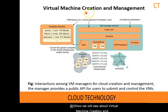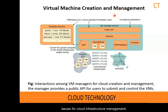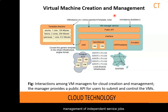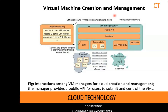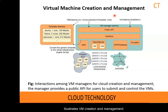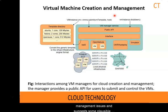Now we will see about virtual machine creation and management. We will consider several issues for cloud infrastructure management, including the resource management of independent service jobs and how to execute third party cloud applications. Cloud loading experiments are used by the Malphone Research Group under the French Grid 5000 system. This experimental setting illustrates VM creation and management. This case study example reveals major VM management issues and suggests some possible solutions for workload balanced execution.